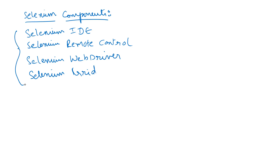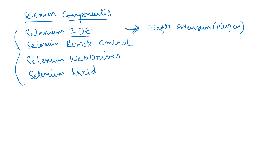These four components are really versions of Selenium used at different times. For example, Selenium IDE — which stands for Integrated Development Environment — is a Firefox extension, meaning it's a Firefox plugin used to record and execute Selenium scripts. After Selenium IDE came Selenium Remote Control, which works with a server and a client that had to be started to write scripts. People are not really using these two anymore.